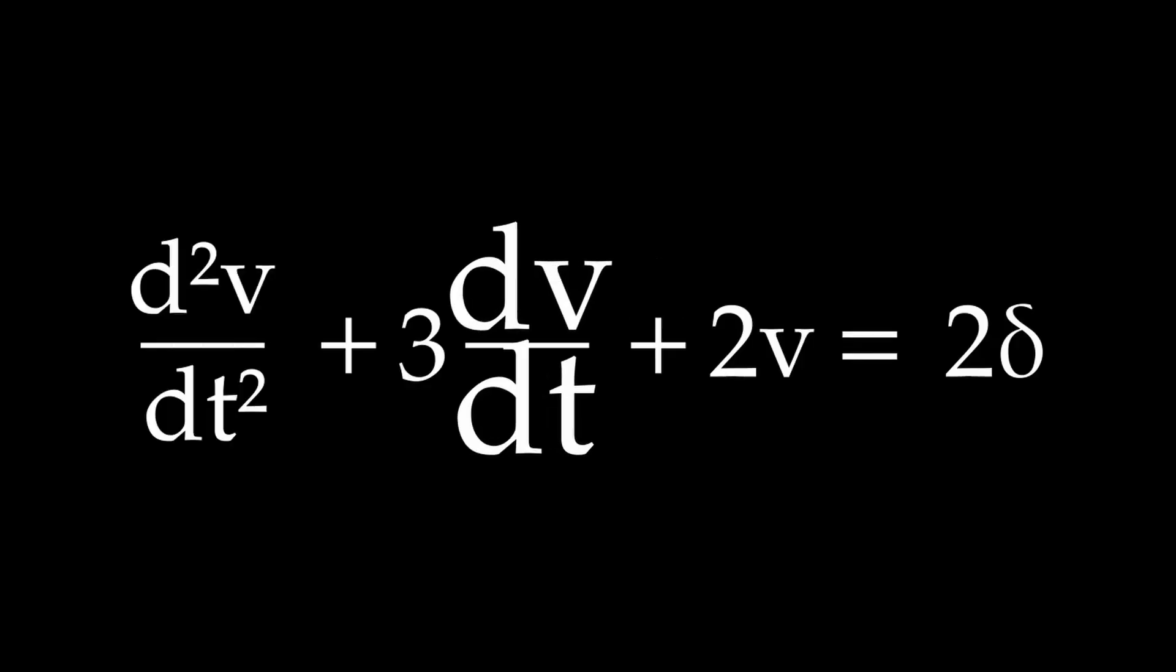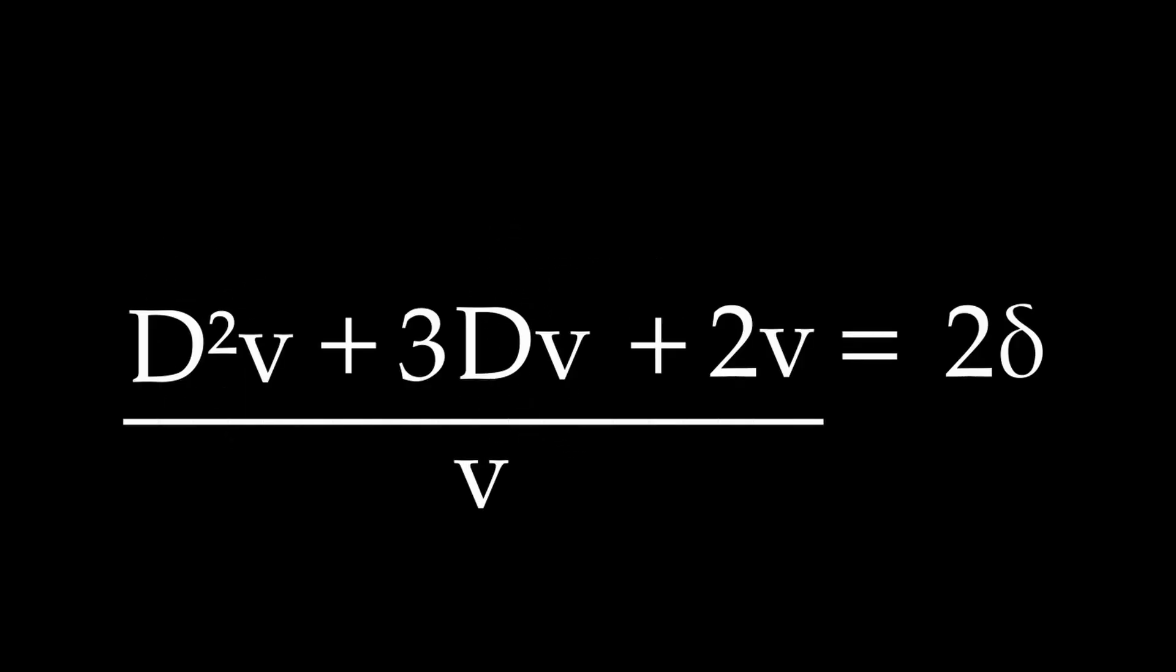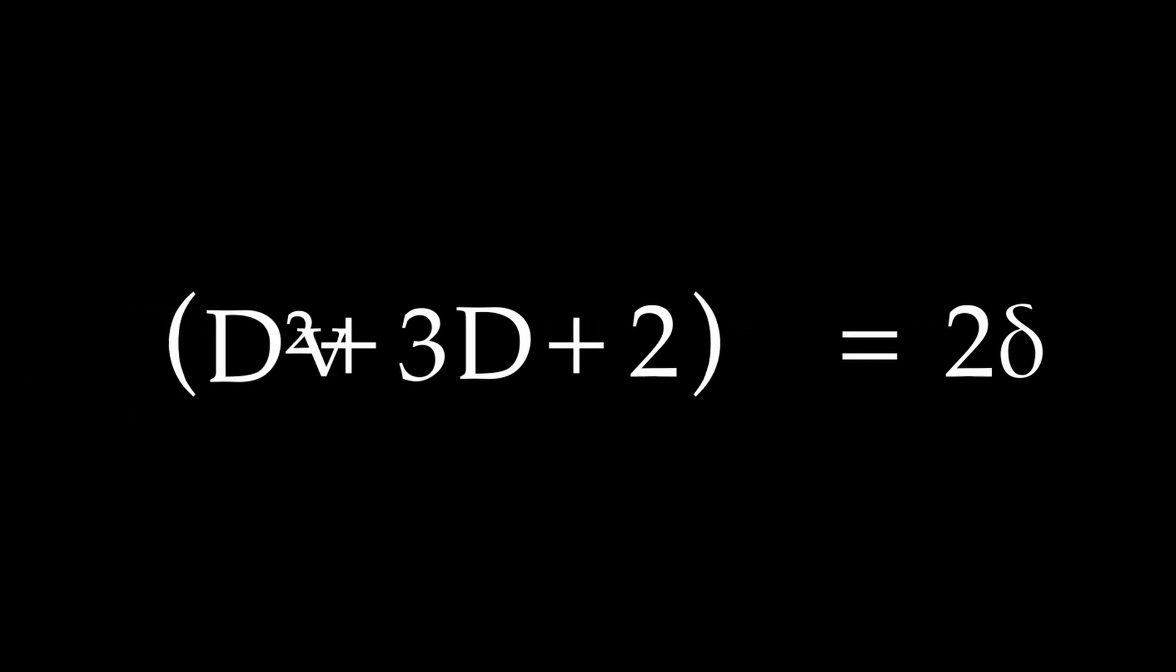Before I give you the full solution with our input x, I want to show you how to solve it for the delta function in general. If we bring out this voltage here, we can act like we're multiplying the derivative by v. This here is what we call an operator.